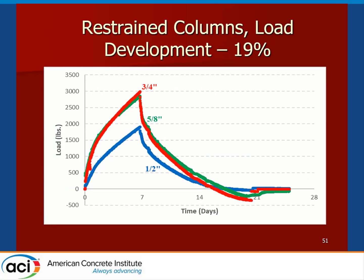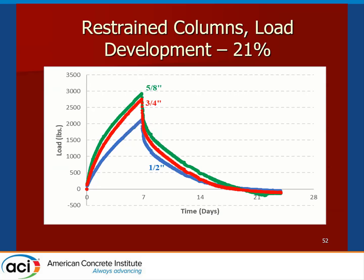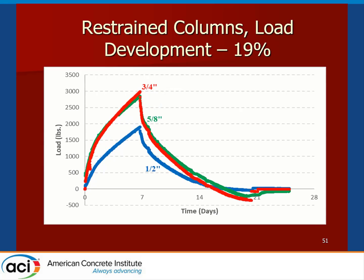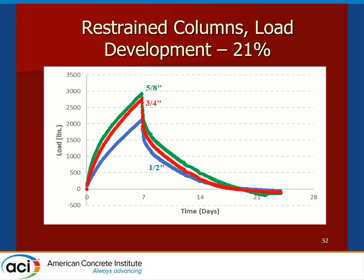Using the load cells, we measured the reaction force. As expected for both 19% and 21% component, the stiffer restraint system — the 5/8-inch and 3/4-inch rods — resulted in a higher force acting on the columns. You can also see that the columns stayed in compression for approximately three weeks before moving into the tension range.